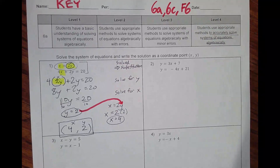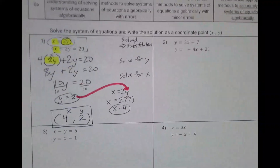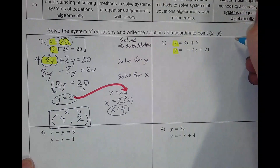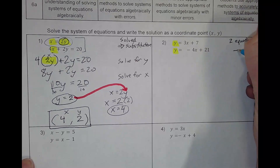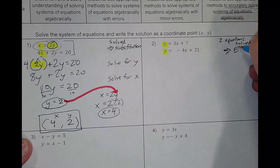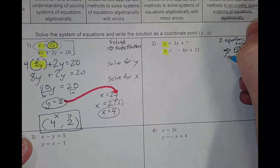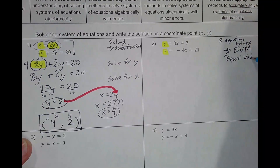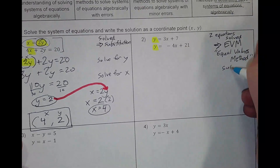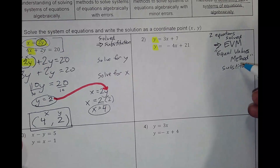Alright, let's jump to problem number 2. For problem number 2, I'm going to notice that we have two equations that are already solved. If that's the case and they're both the same letter — y and y — I'm going to use the equal values method. Another way to say equal values method is actually substitution. It is substitution as well.